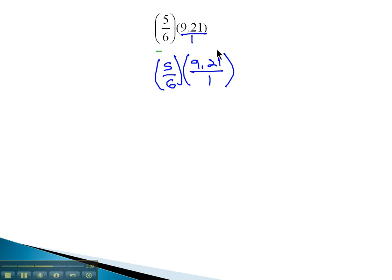And again, because they're fractions, we can multiply them straight across. So in the numerator, 5 times 9.21. 5 times 1 is 5, 5 times 2 is 10, 5 times 9 is 45, and one more is 46. Two decimal digits in our answer, so we have 46.05 over 6 times 1, which is 6.